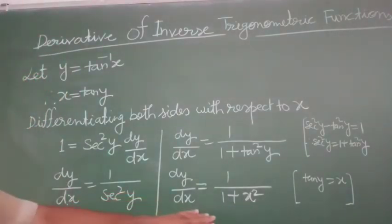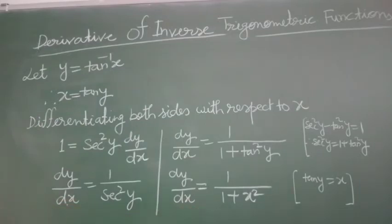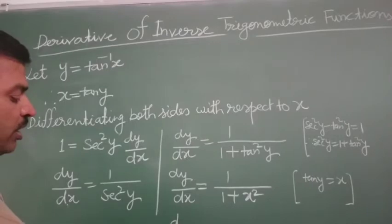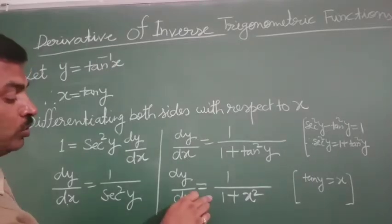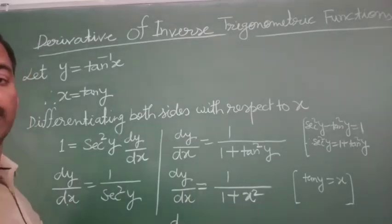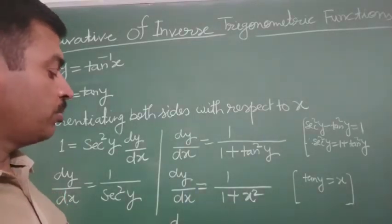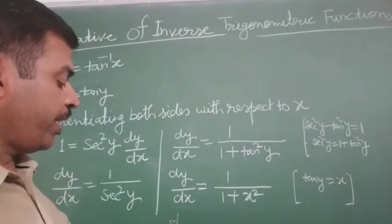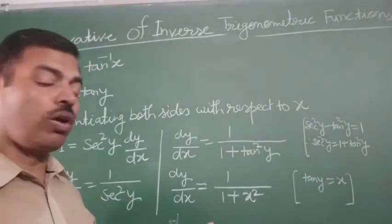So this is the derivative of tan inverse x. We can say the derivative of tan inverse x equals to 1 upon (1 plus x square). Similarly, students, we can find out the derivative of cot inverse x.